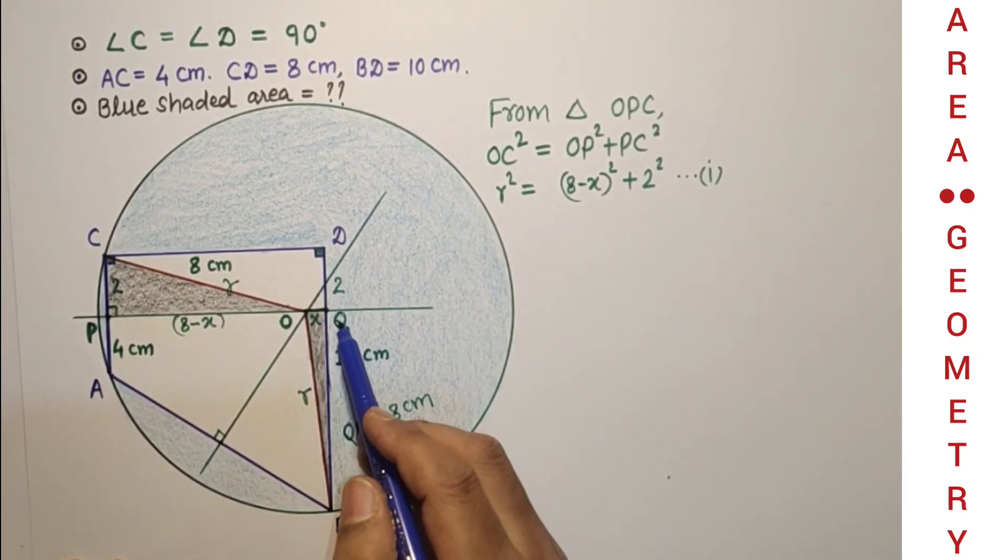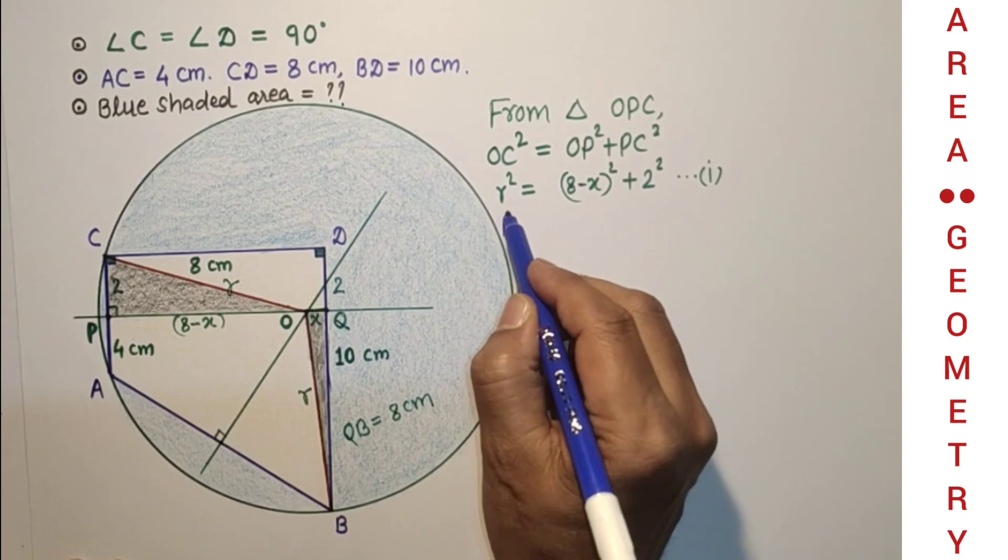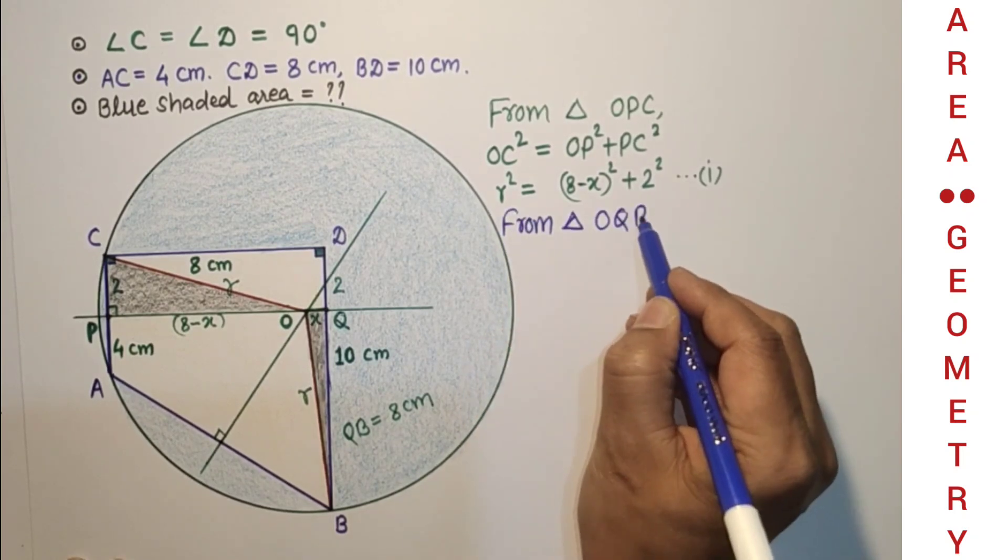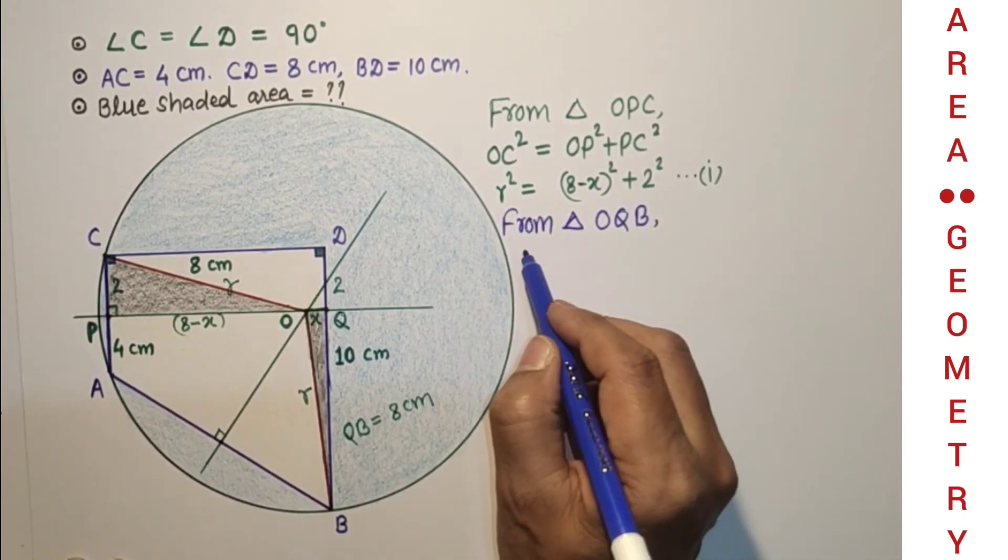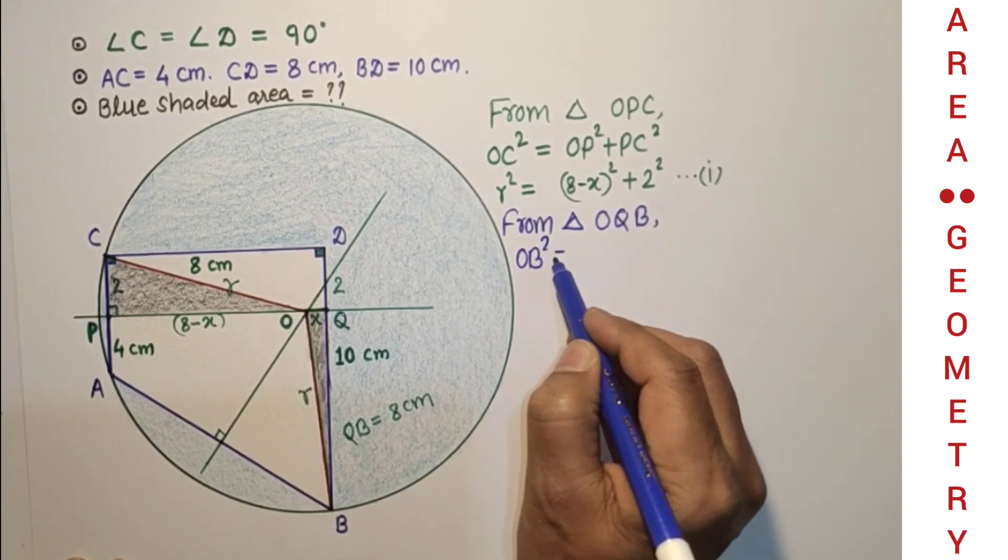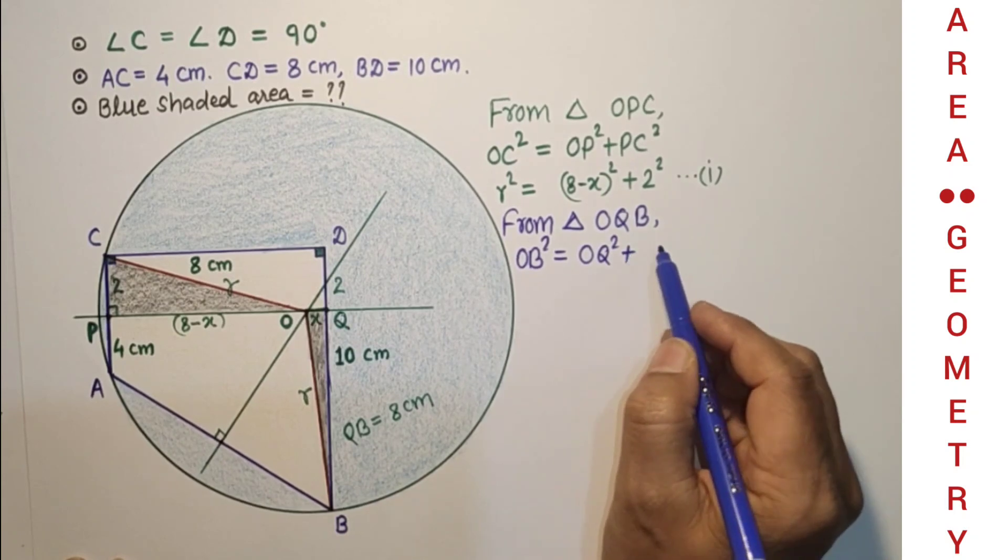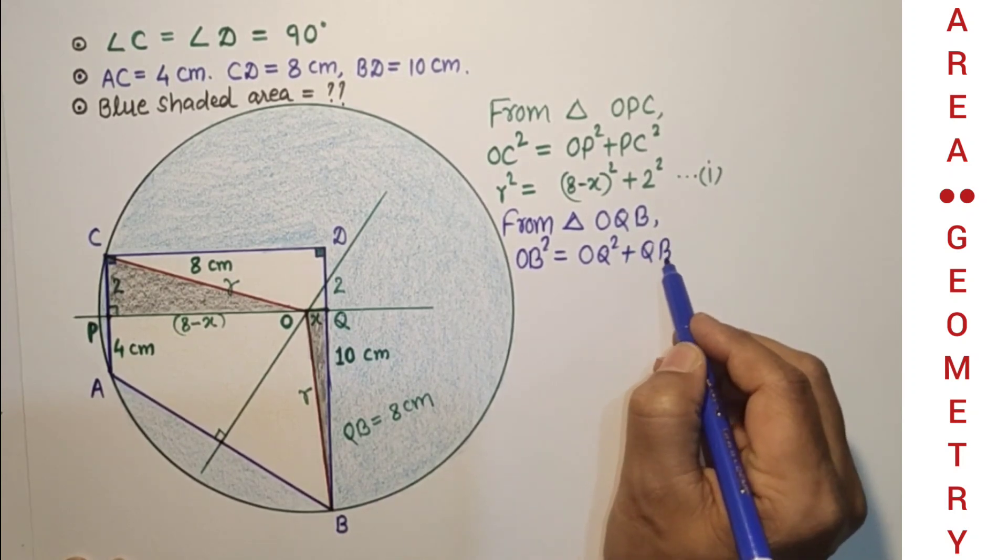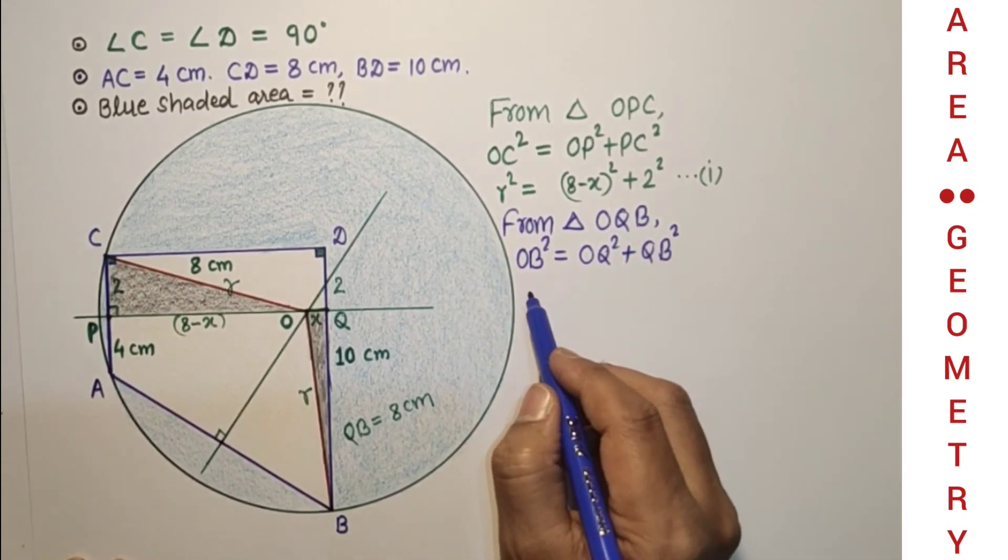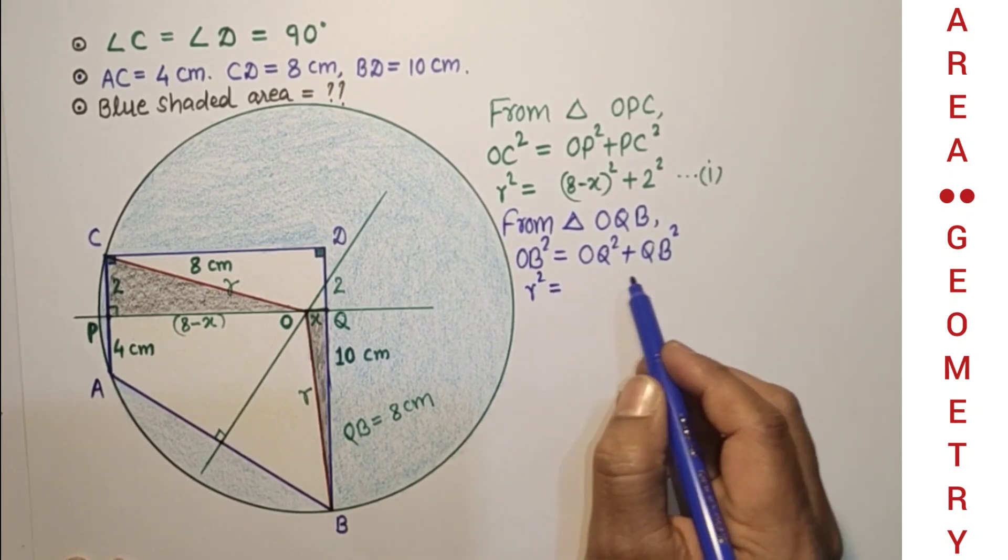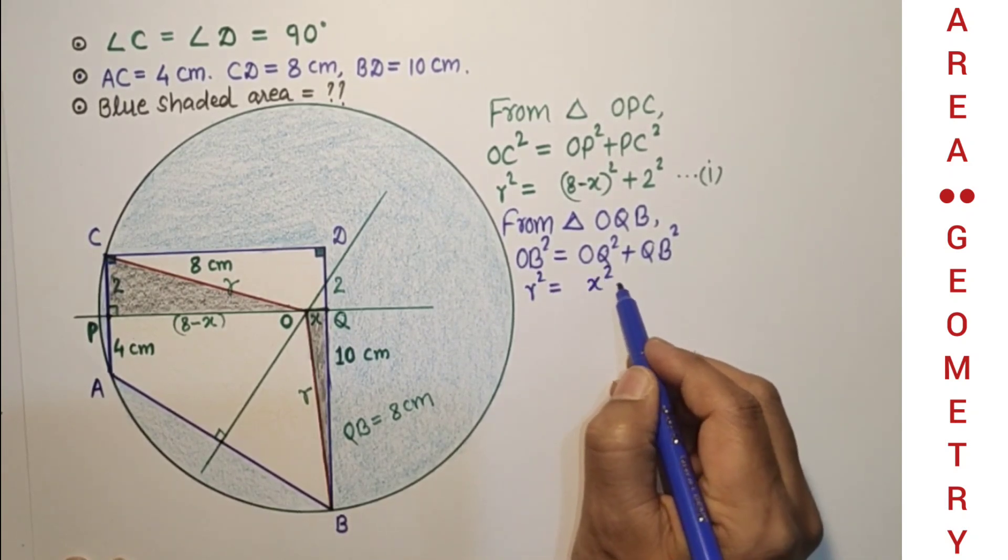From triangle OQB, by Pythagoras theorem, OB² is equal to OQ² plus QB². That means R² is equal to X² plus 8².